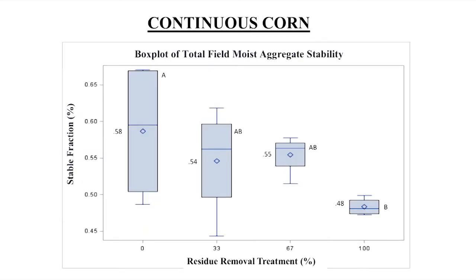We also looked at aggregate stability, a measure of how well the soil particles are glued together, which is related to organic matter. We found that the water stable aggregates were about 58 percent — they would not disperse in water — in the no residue removal, and about 48 percent, about 10 percent less, in the 100 percent removal. So there's this effect where removing the biomass can affect organic matter. This was nearly five years ago, so the effect may be greater now, but we haven't had a chance to look at that again.